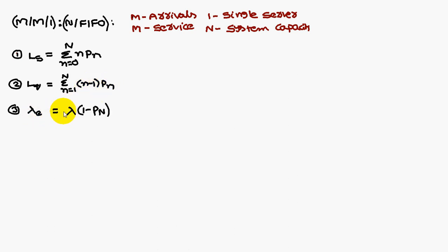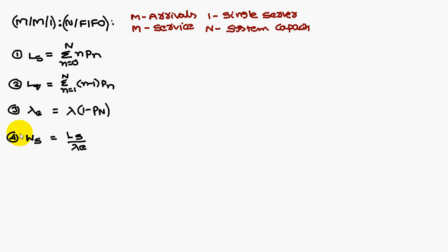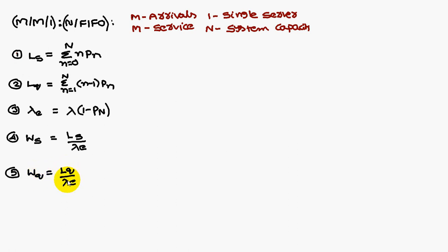Lambda-e is called the effective arrival rate, which is lambda into (1 minus P(N)). The average waiting time of a customer in the system is Ls divided by lambda-e. Similarly, the average waiting time of a customer in the queue is Lq divided by lambda-e.